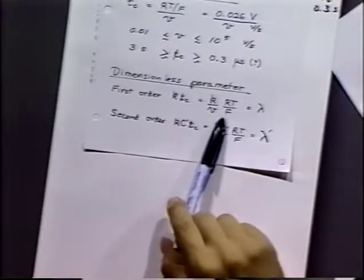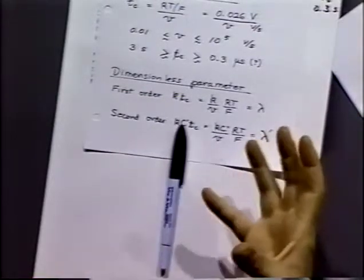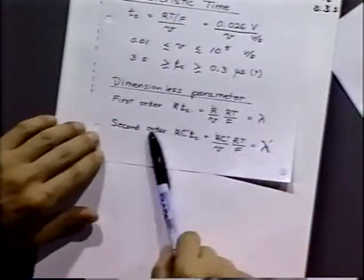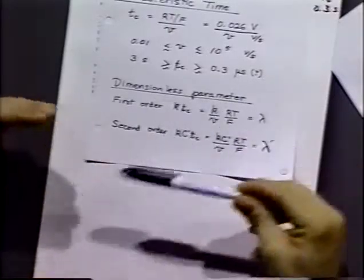As K becomes very large, lambda becomes very large. Holding the scan rate constant, a large lambda corresponds to a very rapid chemical reaction — a very large rate constant. So large values of lambda generally reflect large rate constants. Alternatively, lambda can serve as a proxy for the reciprocal of the scan rate: for small scan rates, lambda is large; for large scan rates, lambda becomes small.